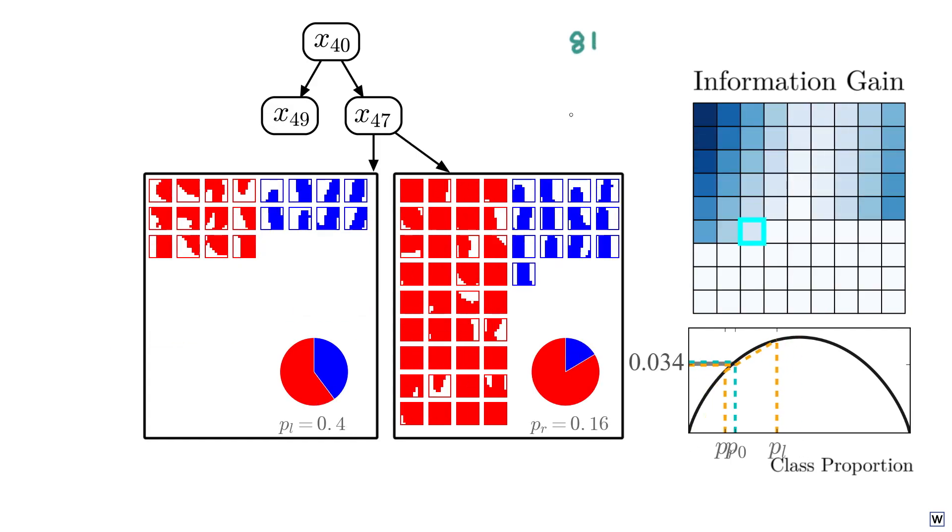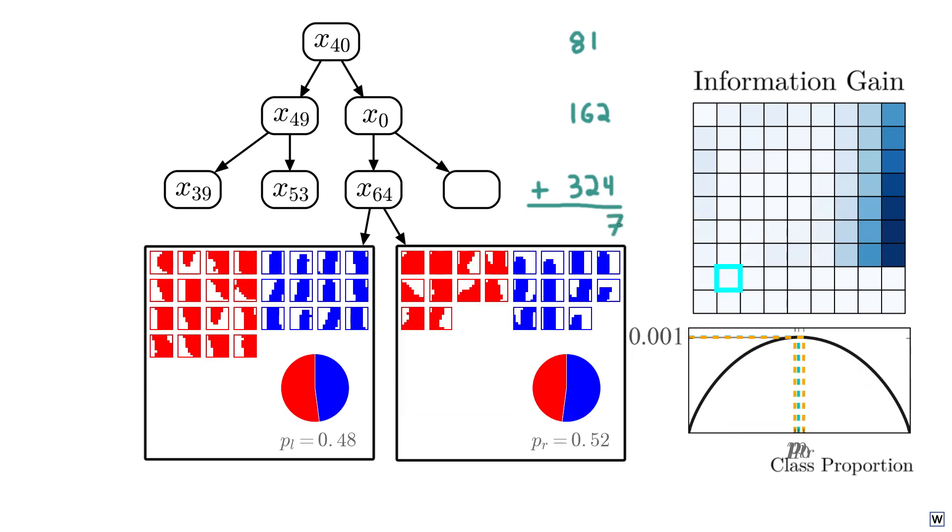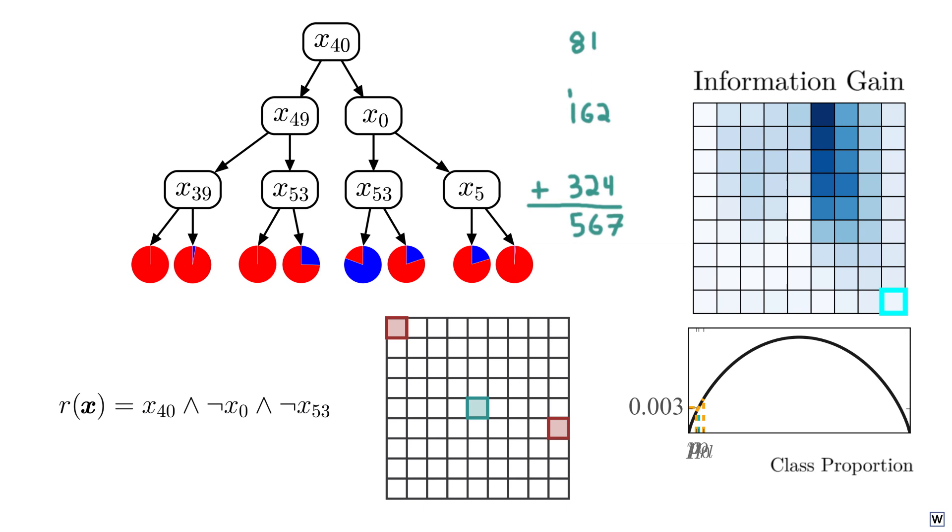Remember that at each node, our decision tree tested 81 possible rules. So across our seven nodes, our decision tree incredibly tested just 567 rules. So our decision tree, guided by our information gain heuristic, found the fourth best rule out of 682,560 after only considering 567 rules. Incredible.